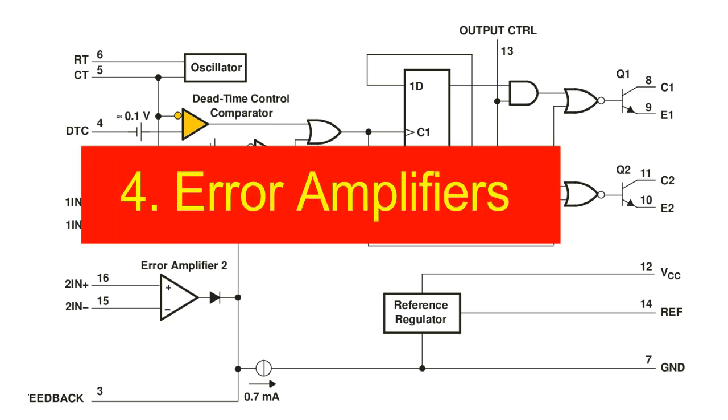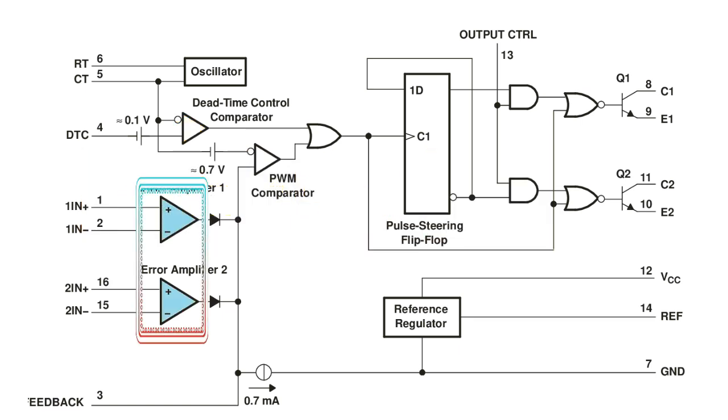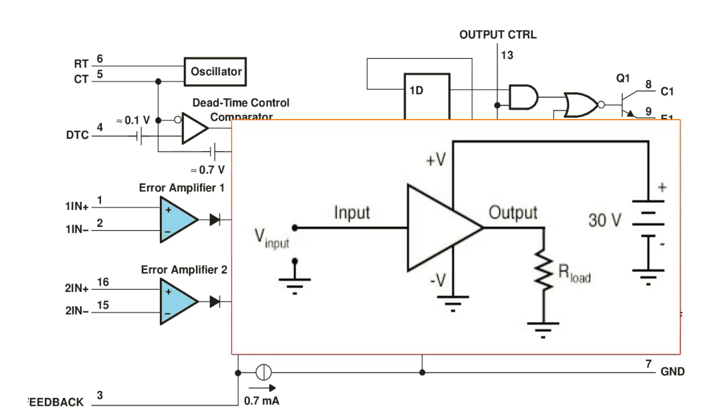Error amplifiers: both high gain error amplifiers receive their bias from the VCC supply rail. This permits a common mode input voltage range from -0.3V to 2V less than VCC. Both amplifiers behave characteristically of a single-ended single supply amplifier in that each output is active high only.